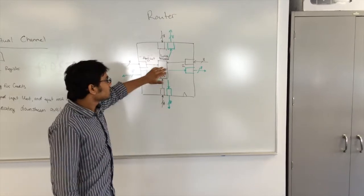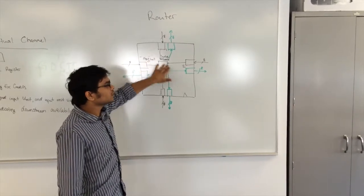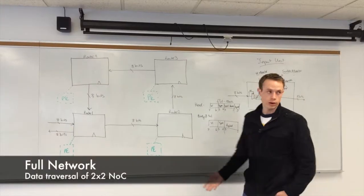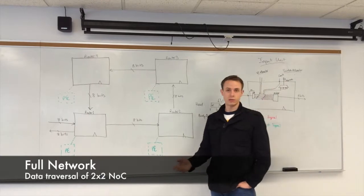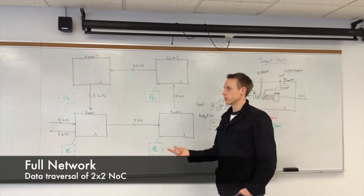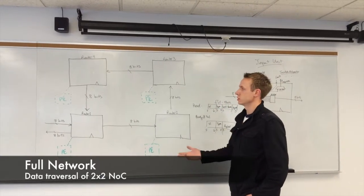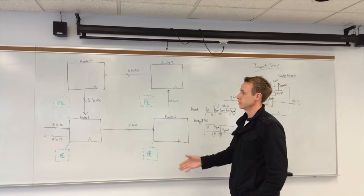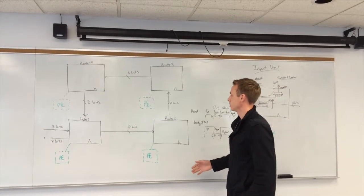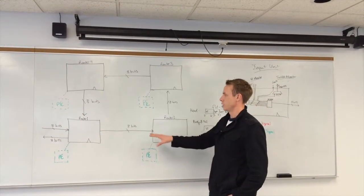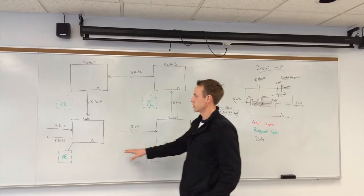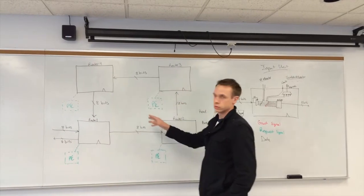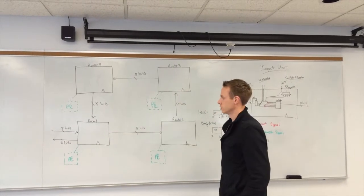The switch allocator allocates the switch and the data passes through. So now that we have all of our elements defined — the arbiter, the virtual channel, the input units, the output units — and we have defined the operation of our router, we can actually build our 2x2 network on chip.